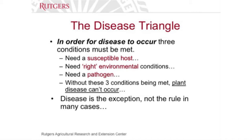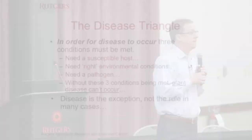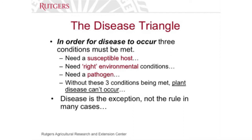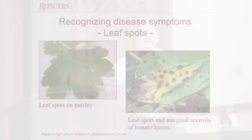Disease is the exception and typically not the rule. The problems you have in your home garden are often from your own creation — something you've planted too close together, plants shading out other plants, too much or too little water, too much or no fertilizer, or your dog dug up your tomato plants. Just because your plants look bad doesn't mean they have a pathology problem.